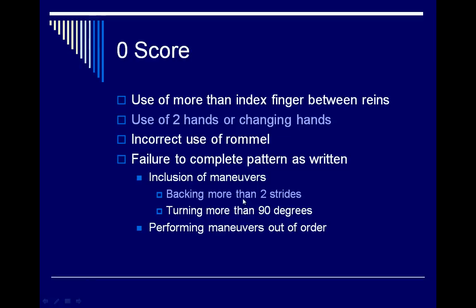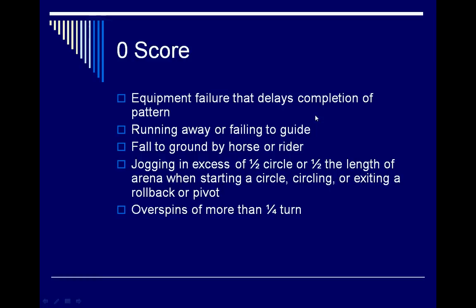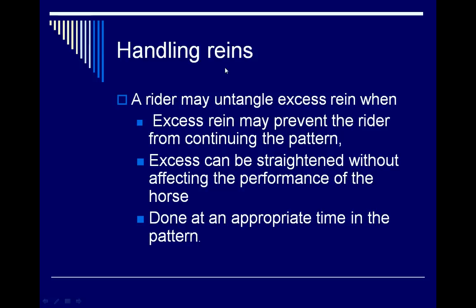Other zero-score situations include: equipment failure that delays completion of the pattern, such as a bridle falling off or a rein breaking; running away or failing to guide; jogging in excess of half the circle or half the length of the arena when supposed to start loping; improper exiting of a rollback or pivot; and overspinning by more than a quarter turn.